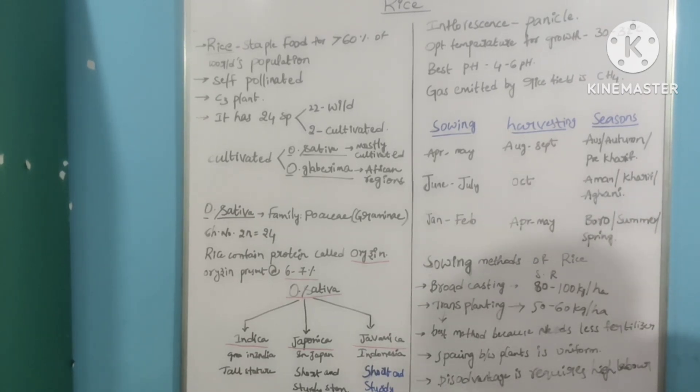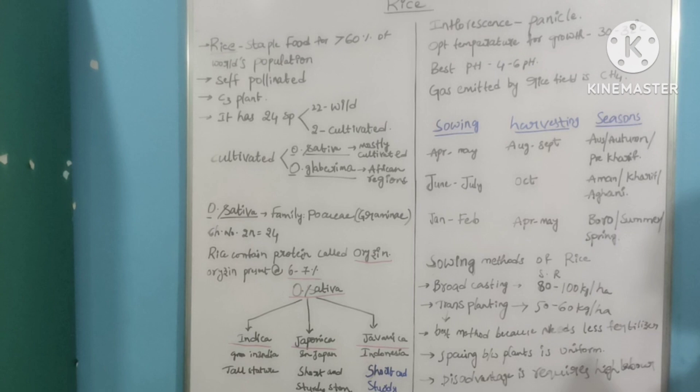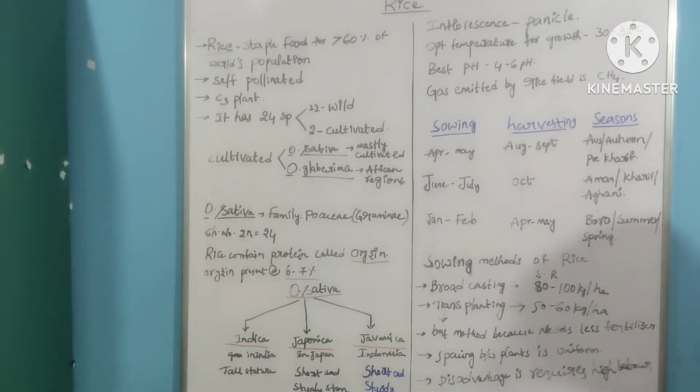Chromosomal number is diploid, that is 2n equals 24. Rice contains protein called Oryzin. The Oryzin present rate is 6 to 7% in Oryza sativa.